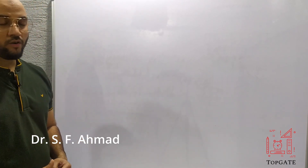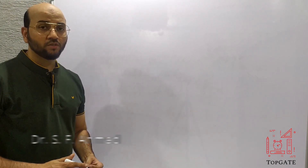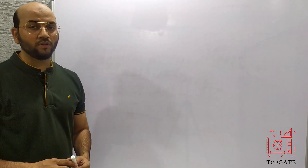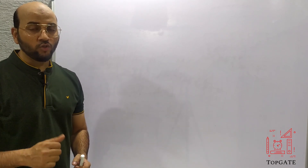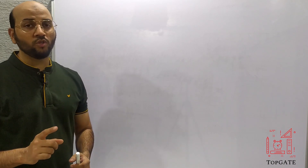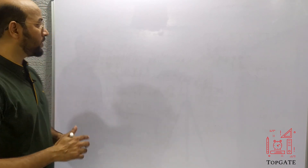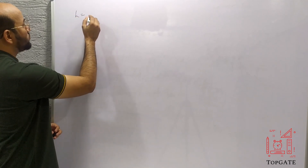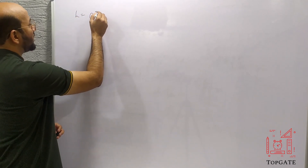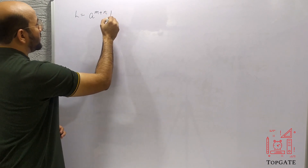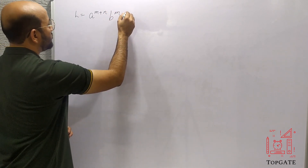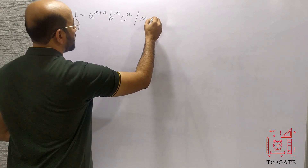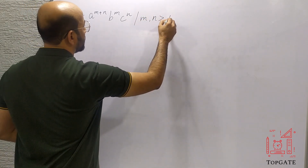Hello students, welcome to the channel Topgate. Today we will discuss one more PDA question: design a PDA for the language L = a^(m+n) b^m c^n, where the value of m and n is greater than or equal to one.